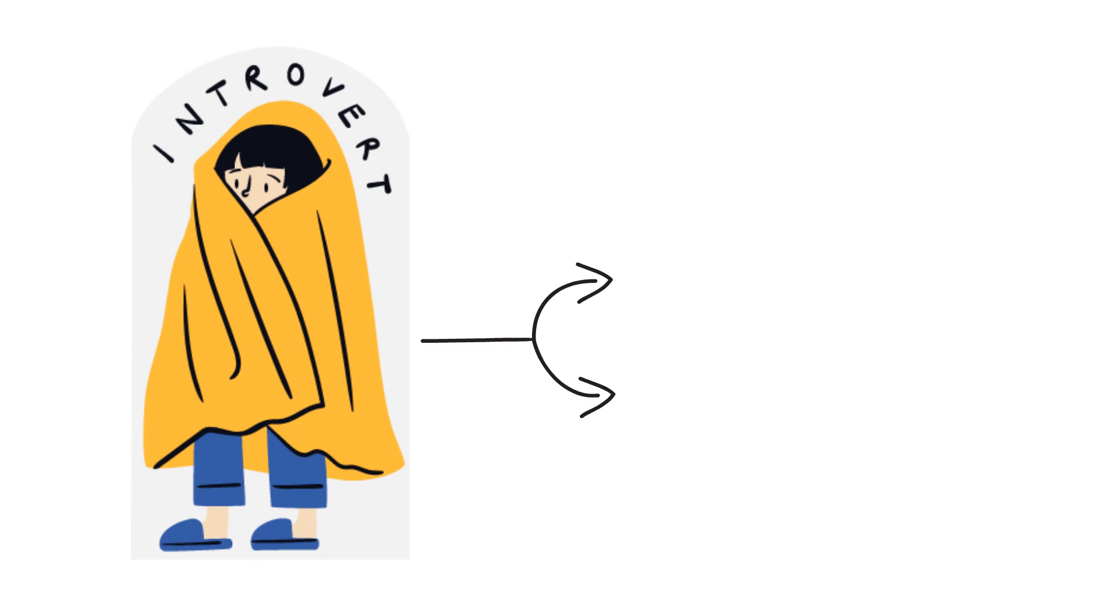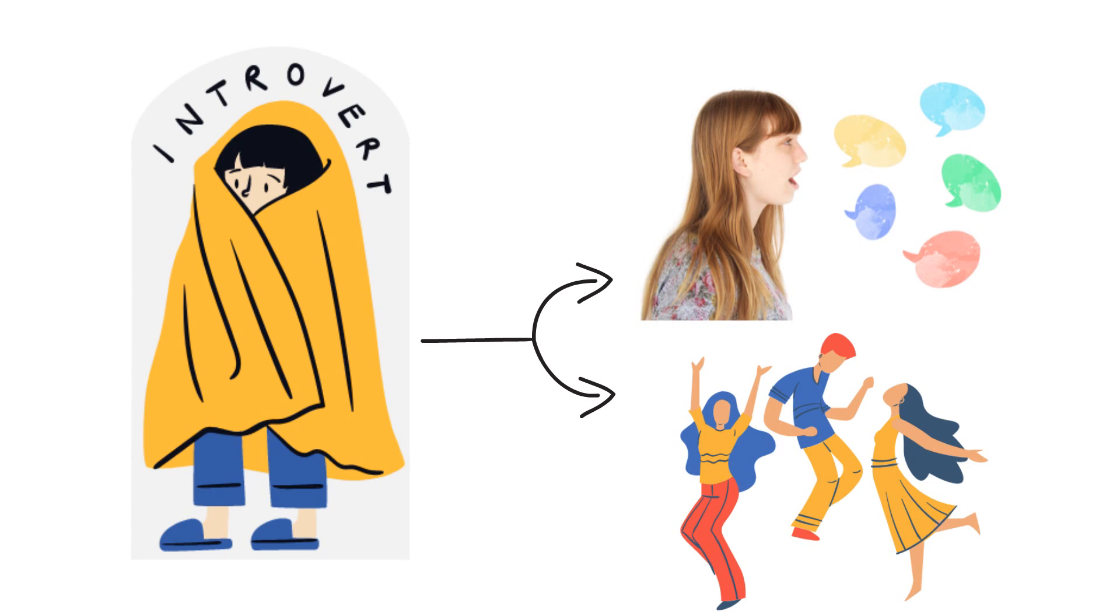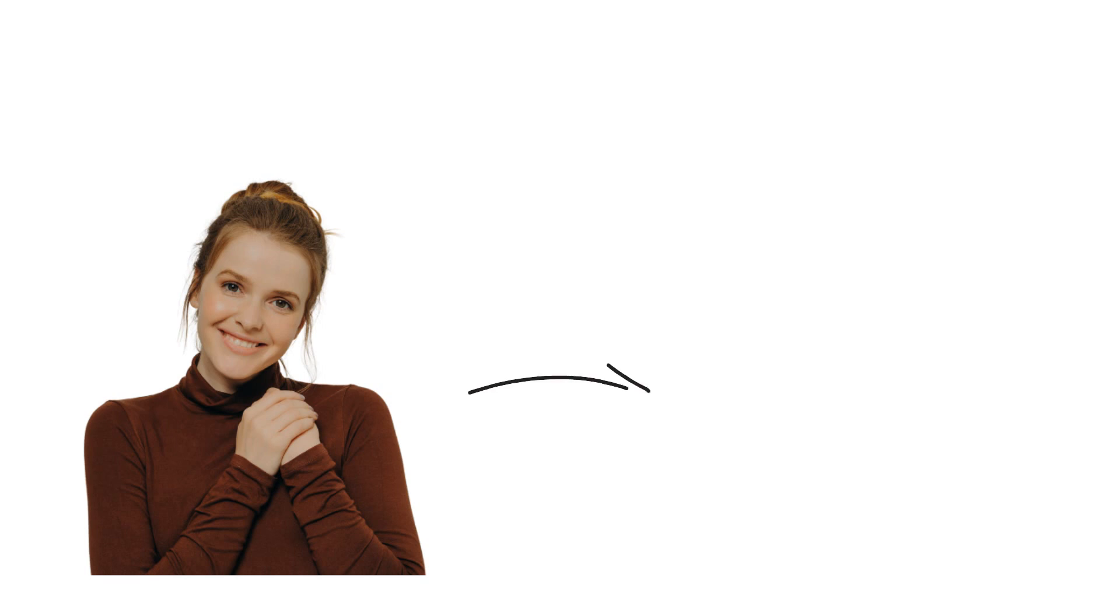And if you're introverted, then you should learn how to speak in public and to learn how to go to parties without hiding in the corner and saying nothing to anyone. And if you're agreeable, then you need to learn how to be disagreeable so people can't push you around. And if you're disagreeable, you need to learn how to be agreeable.